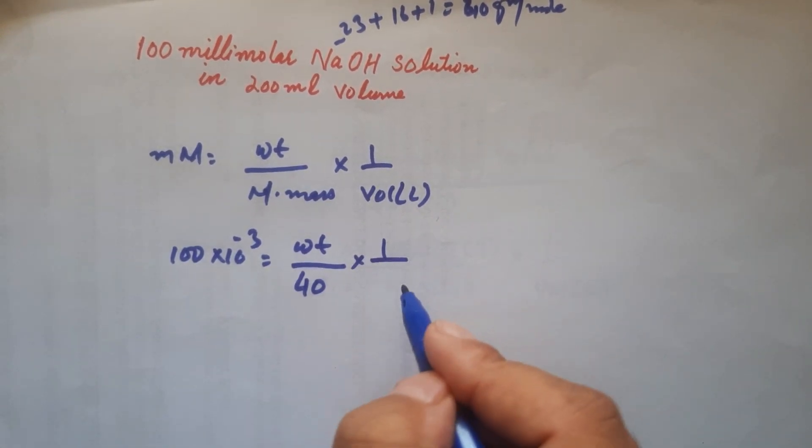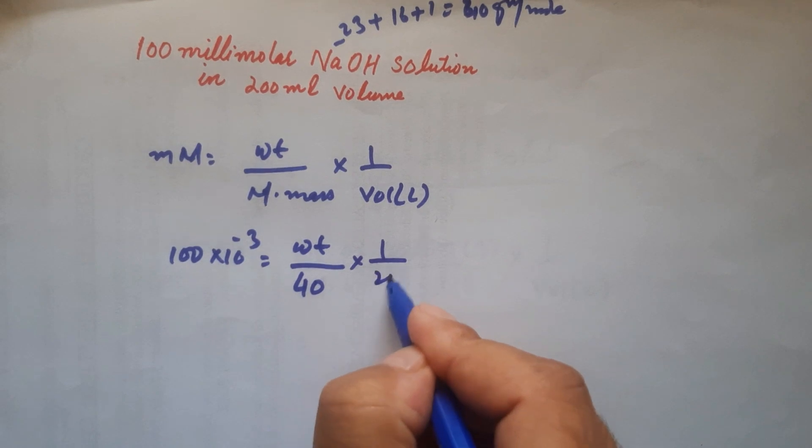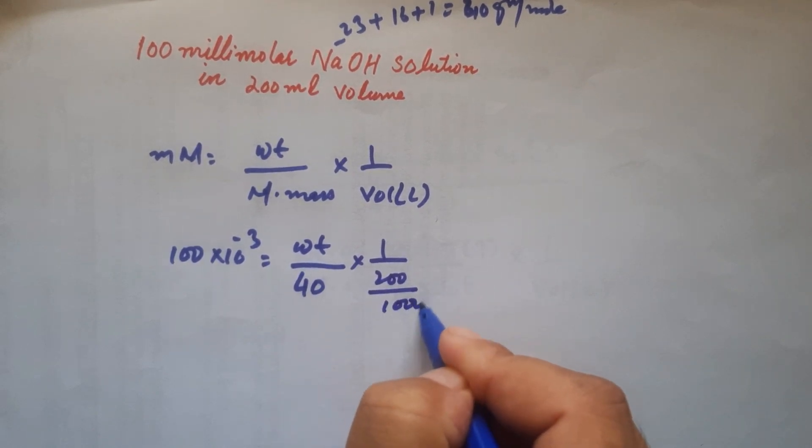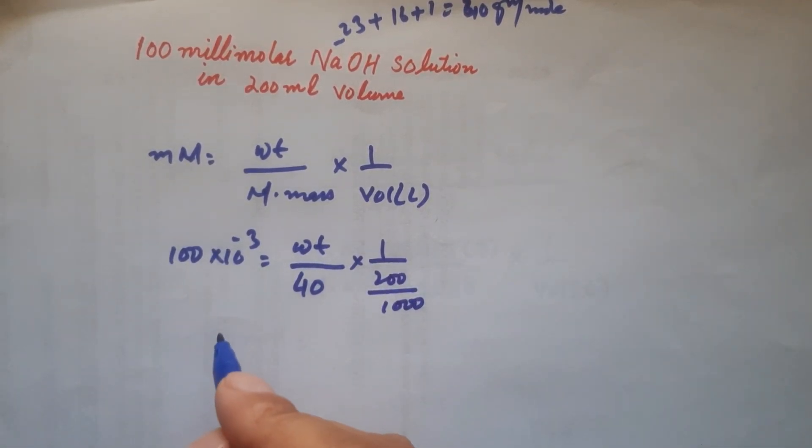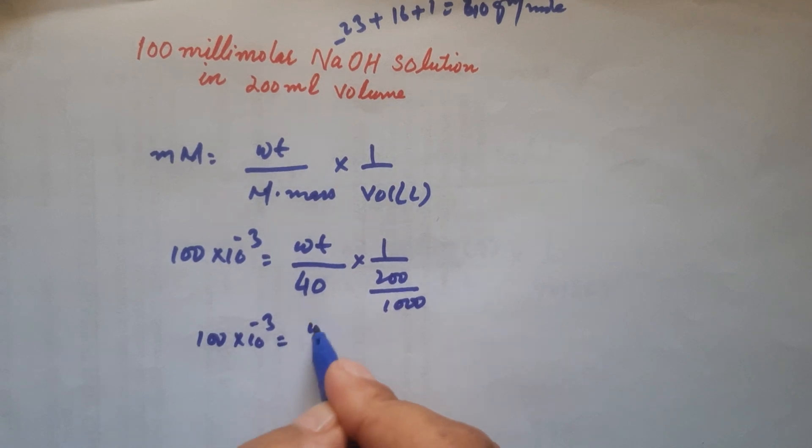And the volume that we have been given is 200 mL, so convert this volume into liters: 200 divided by 1000. So this would come out to be 0.2.